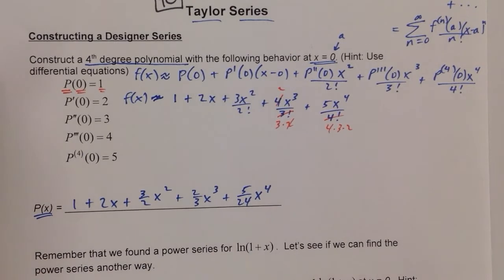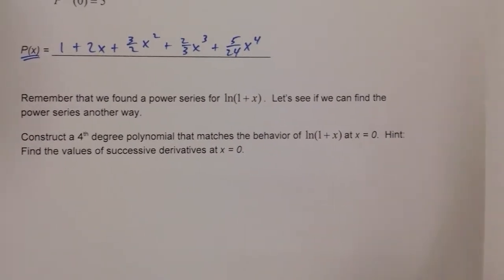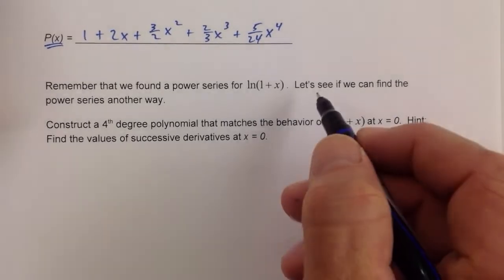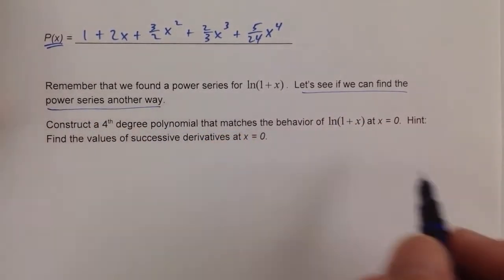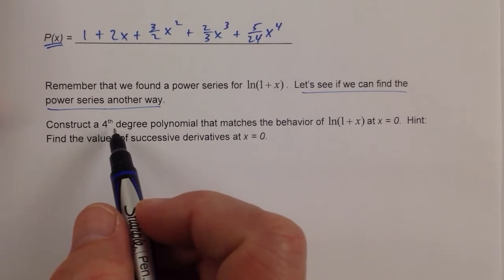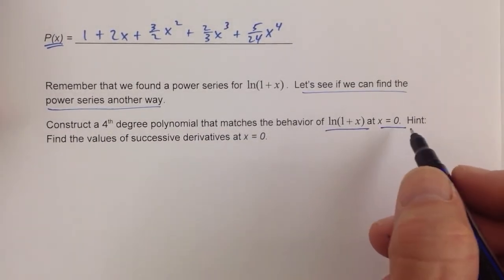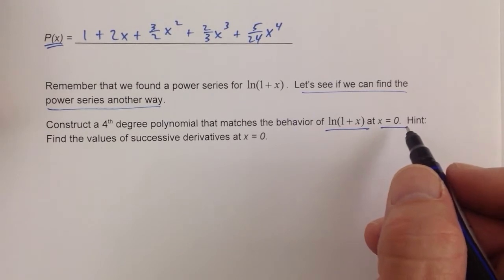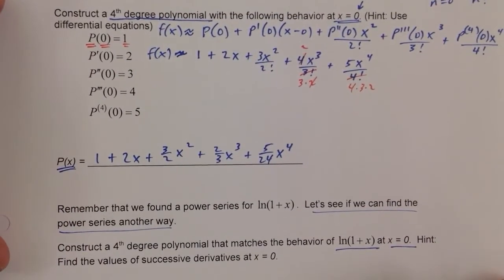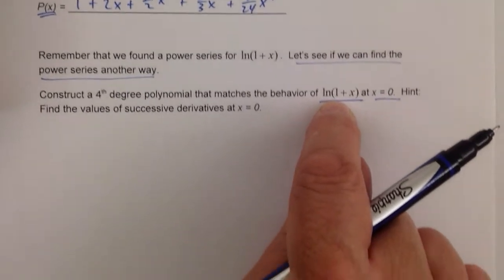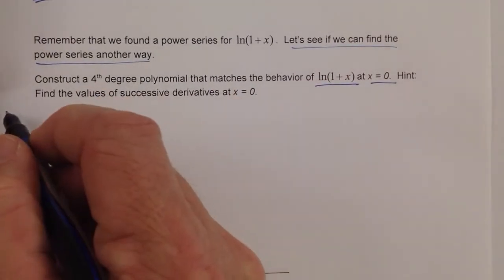Let's look at the next example. Remember that we found a power series for ln of 1 plus x. Let's see if we can find the power series another way. Construct a fourth degree polynomial that matches the behavior at x equals 0. We just need to generate successive derivatives at 0 for this particular function — so we have ln of 1 plus x.